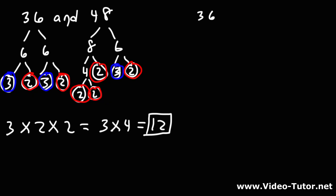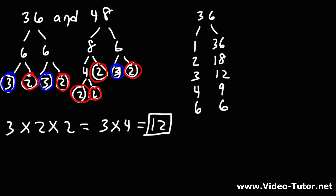Now let's confirm it with our second method. Let's write out the factors of 36 in order. 36 divided by 1 is 36. 36 divided by 2 is 18. Divided by 3 is 12. Divided by 4 is 9. 5 doesn't go into 36. Divided by 6 is 6, and we could stop there. 7 and 8 don't go into 36. If we go to 9, we get 4, and then the numbers will reverse, so we could stop here.